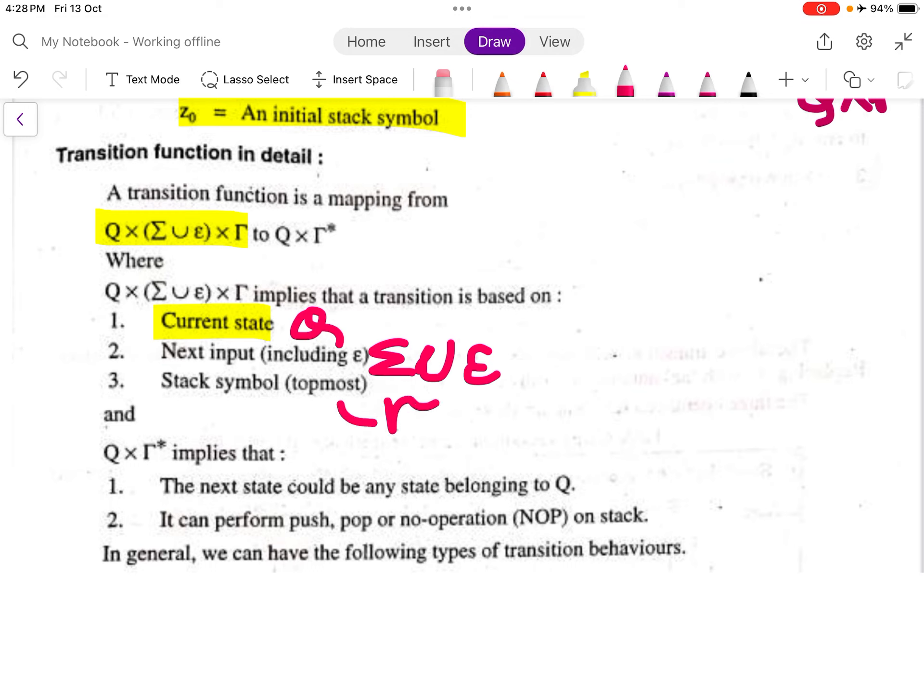The second part, Q × Γ*, means it goes to some other state. The next state could be any state belonging to Q. It can perform a push, pop, or no operation on the stack, meaning it can transition to any other state.